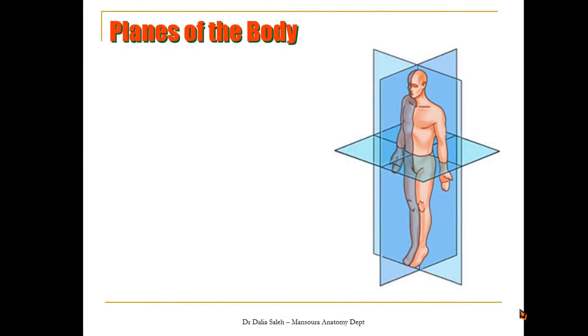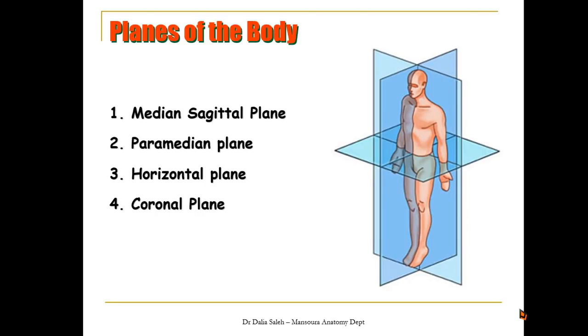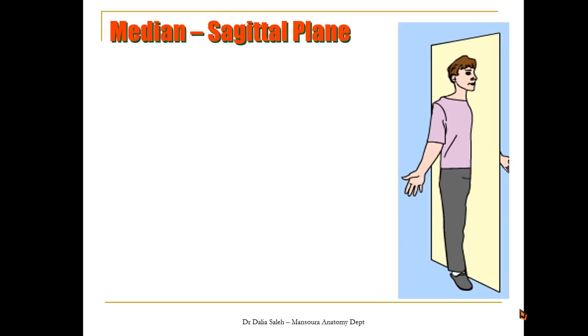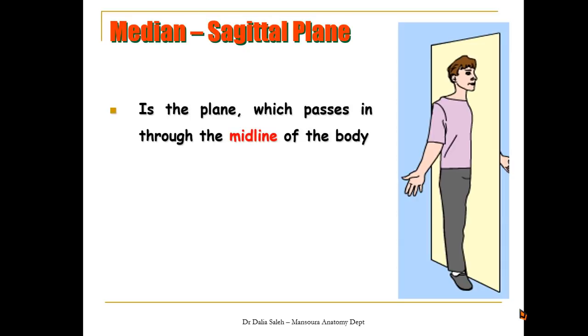Then we have what's called the planes of the body. Again, these are imaginary planes that we imagine that it cuts the body at different directions. We have the median sagittal plane, the paramedian, the horizontal and the coronal planes. The median sagittal plane is an anteroposterior plane that passes through the midline of the body exactly. Thus, it divides the body into two equal halves, right and left.